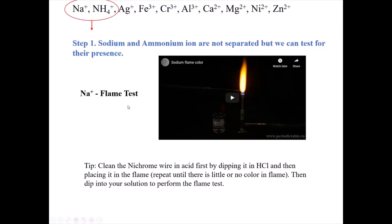The first two ions we're going to look at are sodium and ammonium. We're going to look at these separately because we don't separate these ions out—they're too hard to take out of solution. We're going to test for them, but we're never going to actually remove them from solution.